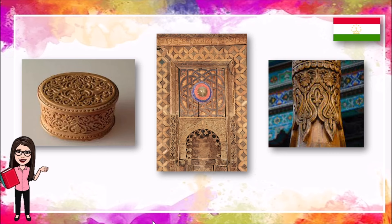When Islam came, Tajik carving gradually changed to Arabian inscriptions, using images of people and animals, while some carvers prefer vegetative and geometrical patterns. In architecture, ornaments in the form of lotus, tulips, and other flowers are more common.